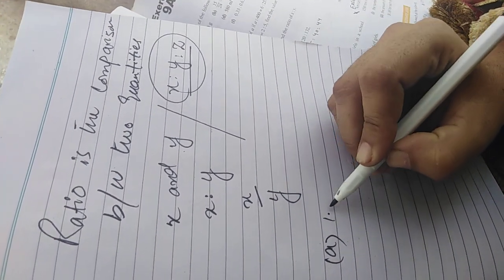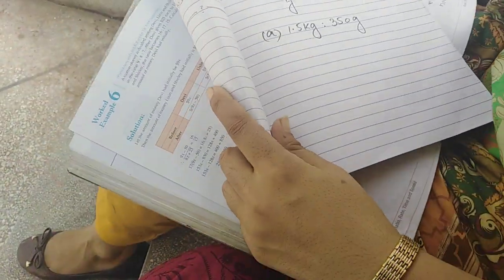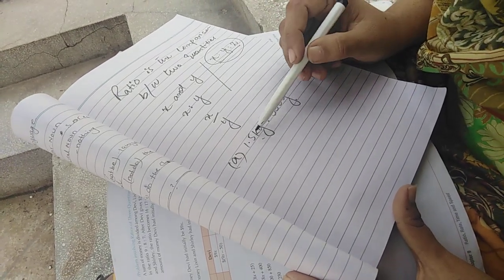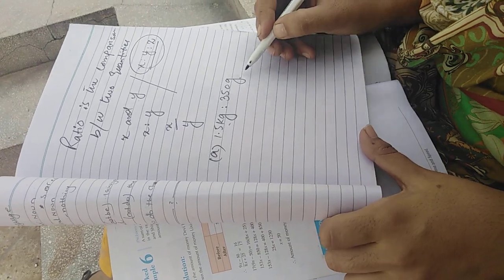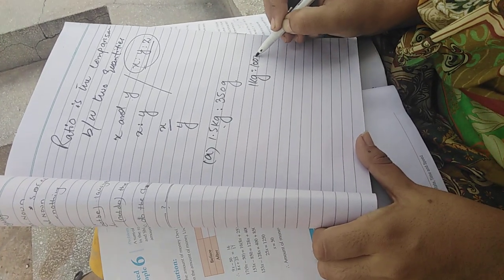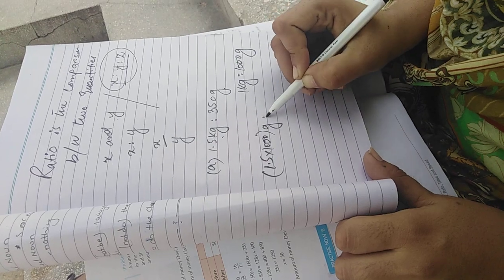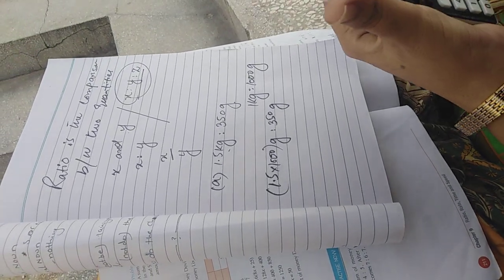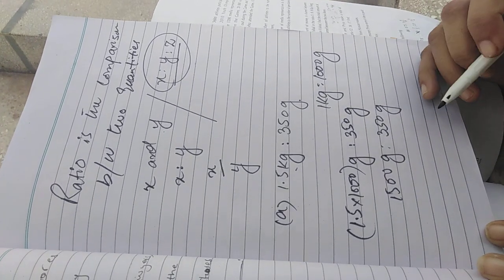The first problem is 1.5 kilogram ratio 350 gram. To find out the ratios, units must be same. Here it is kilogram and here it is gram, so you have to convert kilogram into grams. One kilogram is equal to thousand grams, so multiply 1.5 by thousand to convert it into grams. It will become 1500 grams. Now we have 1500 grams and 350 grams.